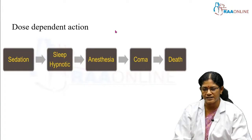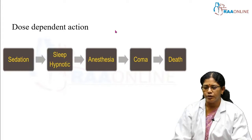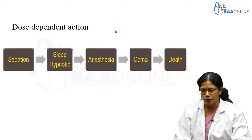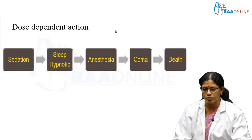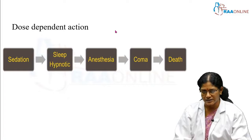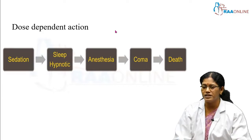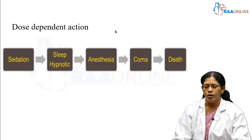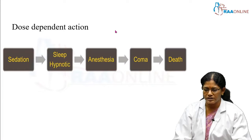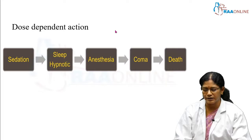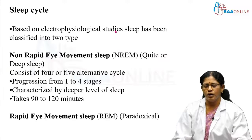In a mild dose, it produces sedation — that means it reduces anxiety and produces calmness. When the dose is increased, it produces hypnotic action and induces sleep. Increasing the dose further affects consciousness and produces anesthesia. Still higher doses produce medullary paralysis, coma, and finally a fatal condition. The therapeutic effect mainly depends on CNS depression.